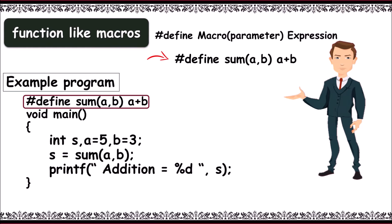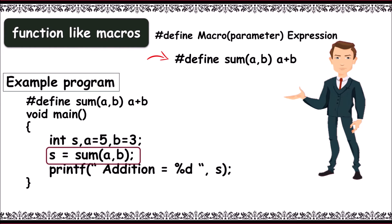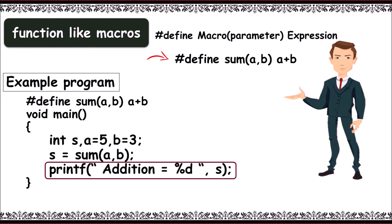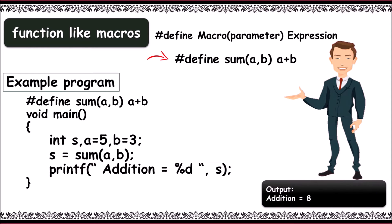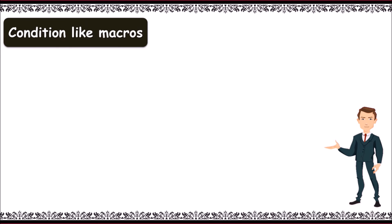Example program: #define sum(a, b) a + b. In main, declare variables s, a = 5, b = 3. Then s = sum(a, b), where sum(a, b) is replaced with a + b and the expression is evaluated as 5 + 3 = 8. printf prints the output: addition = 8.